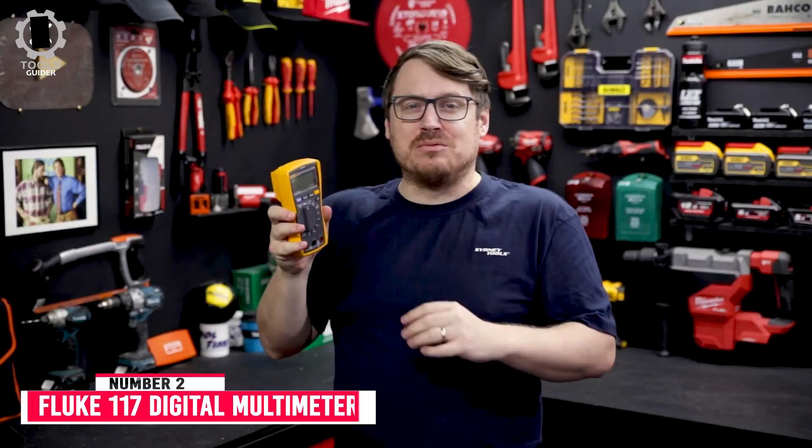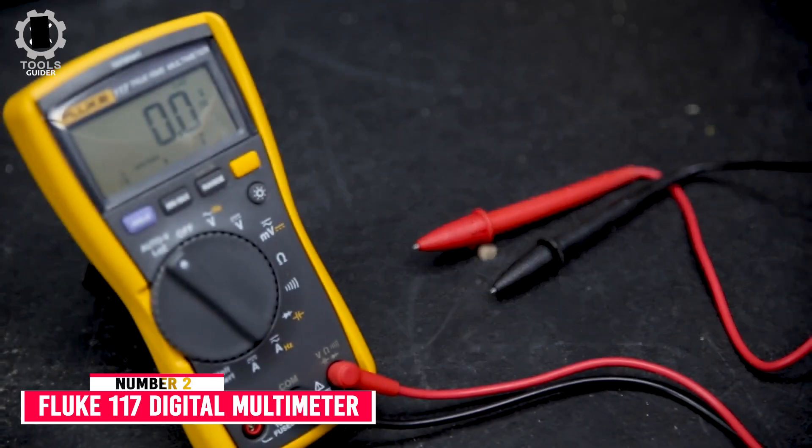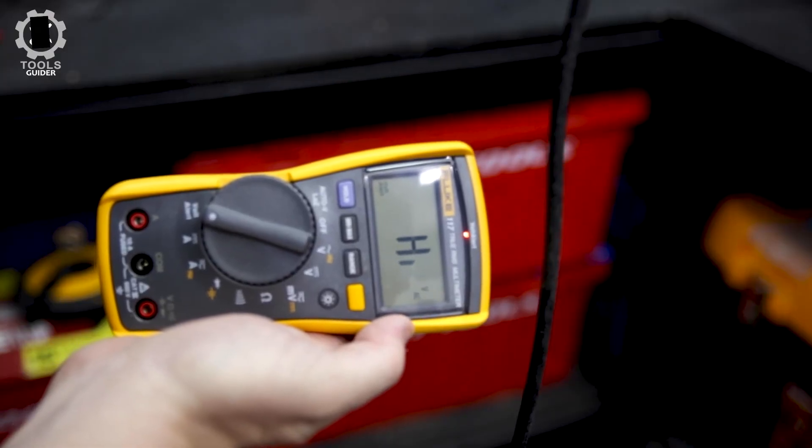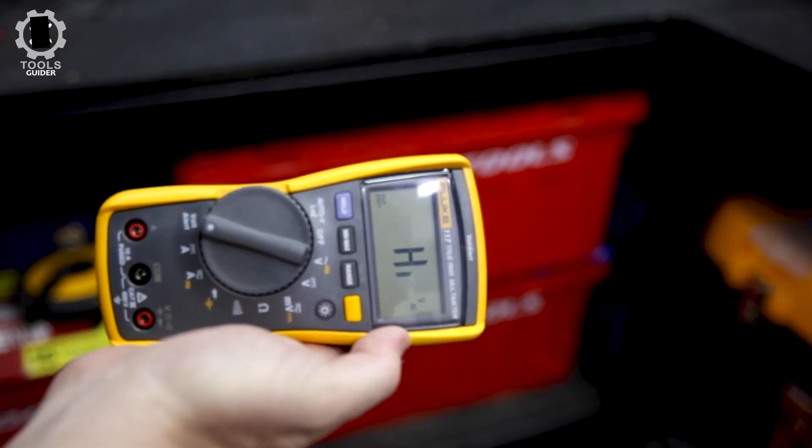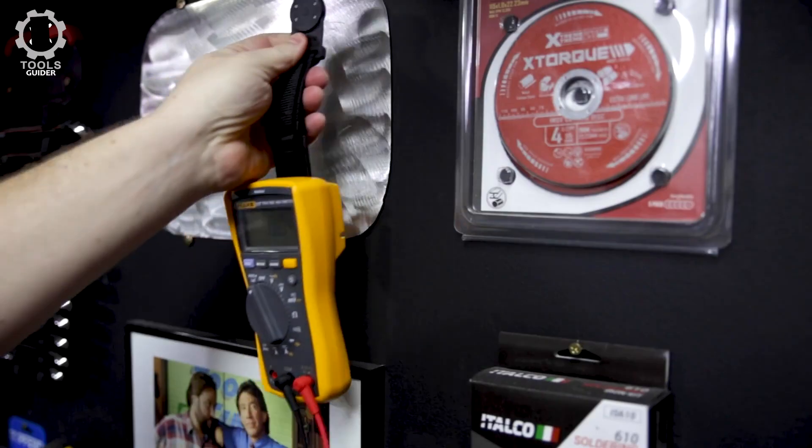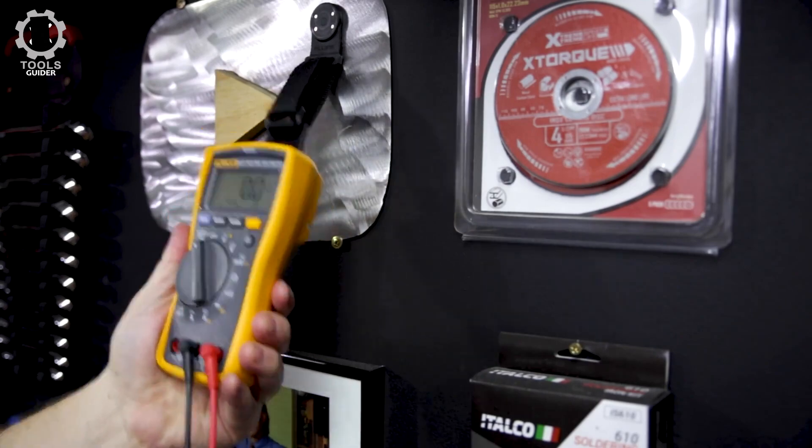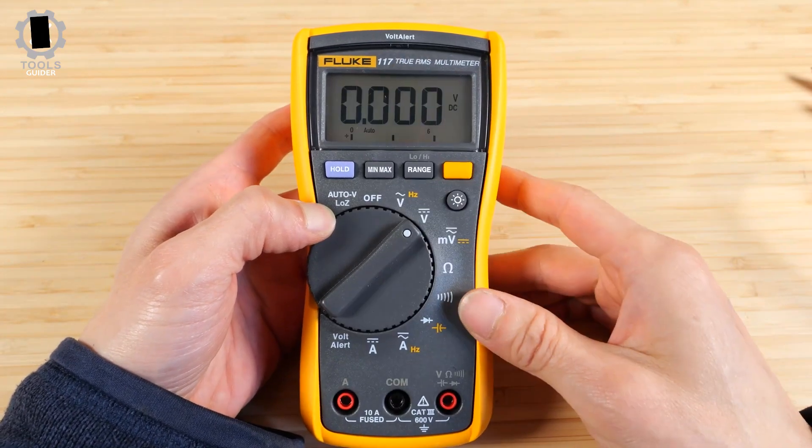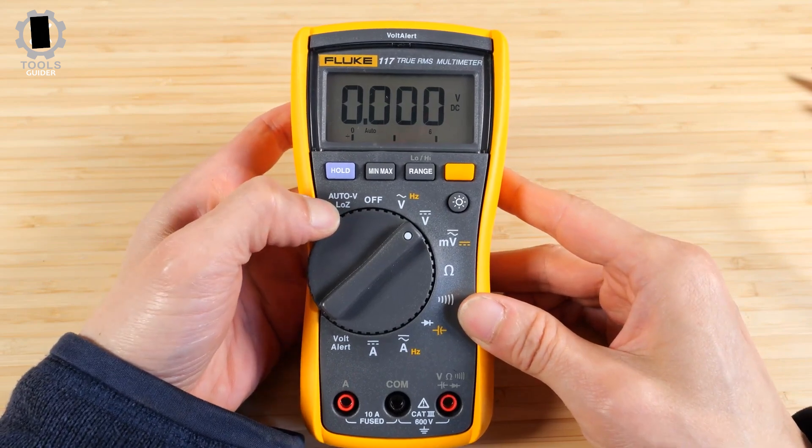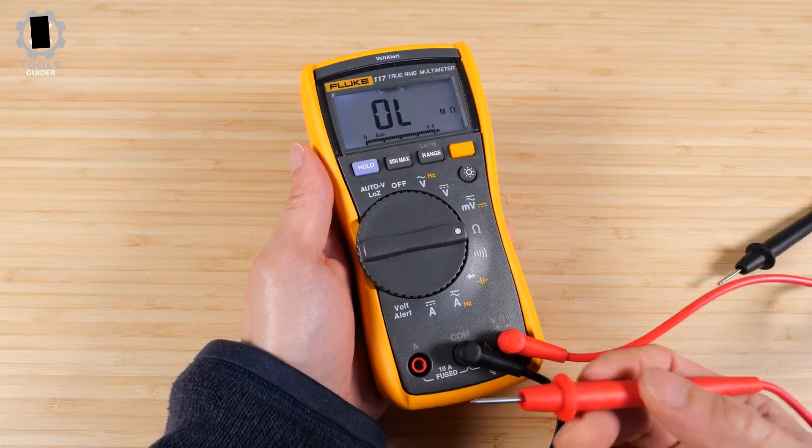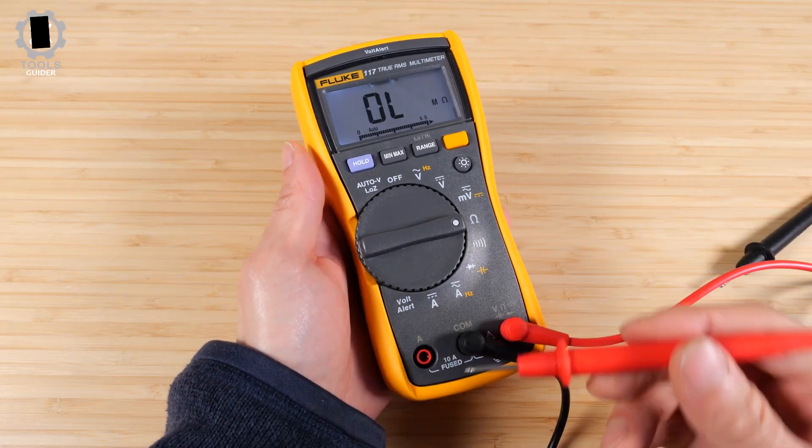Number 2. Fluke 117 Digital Multimeter. The Fluke 117 Digital Multimeter can be used to carry out a wide range of measurements on both AC and DC electrical systems up to 600 volts, which includes appliances, outlets, control panels, and wiring in your home. It's nicely compact, and at 6.57 x 3.31 x 1.81 inches, it fits right in your hand, making it easy to grip during testing.